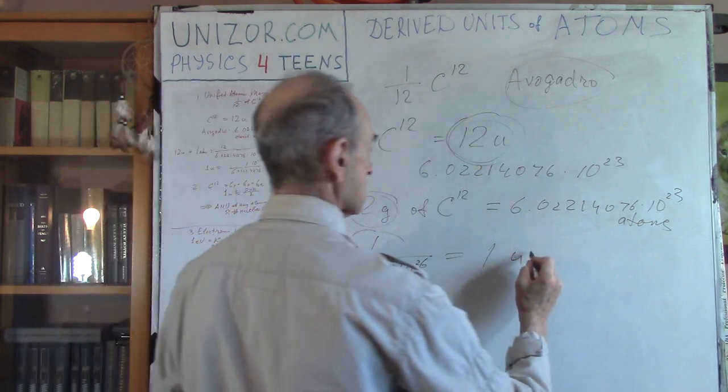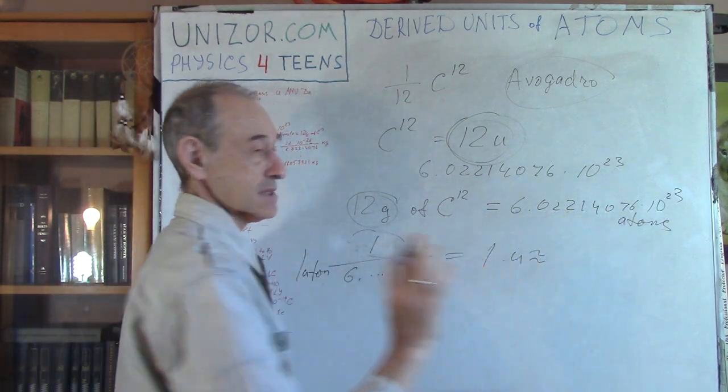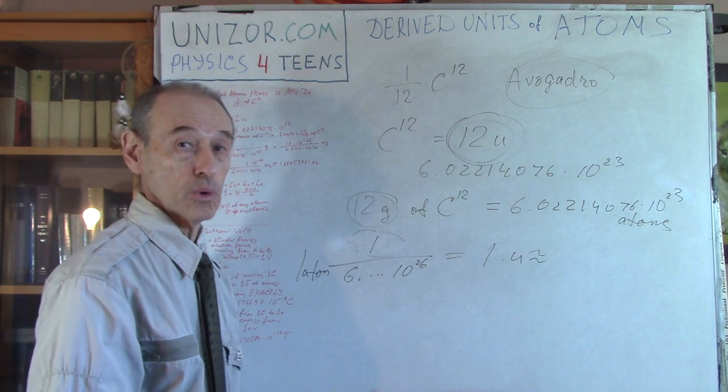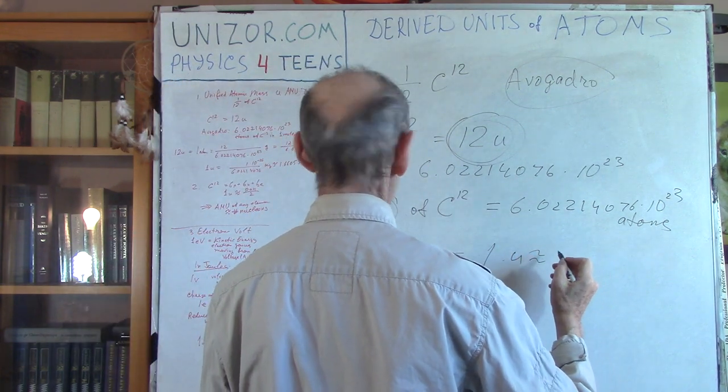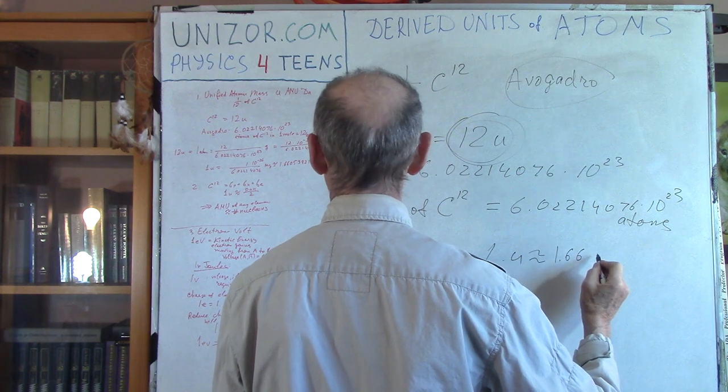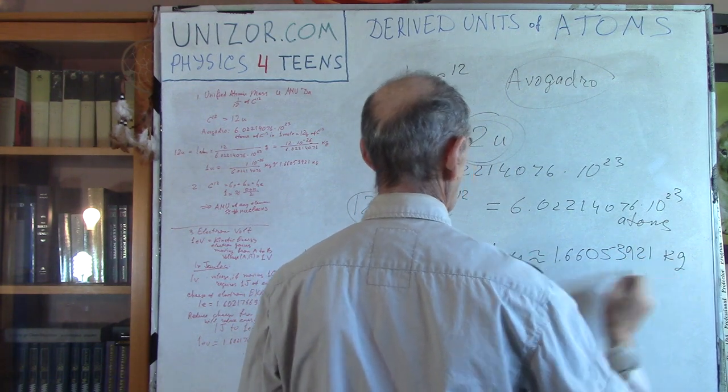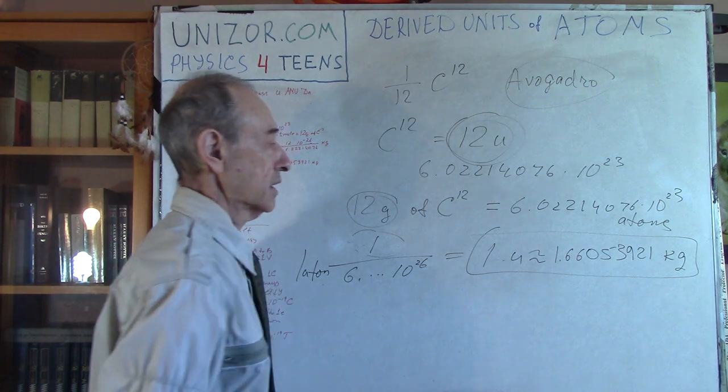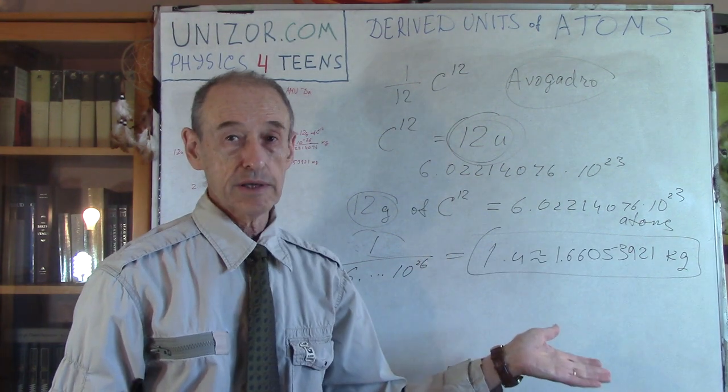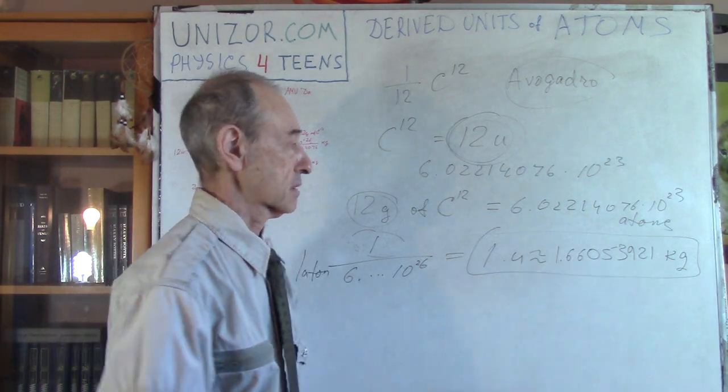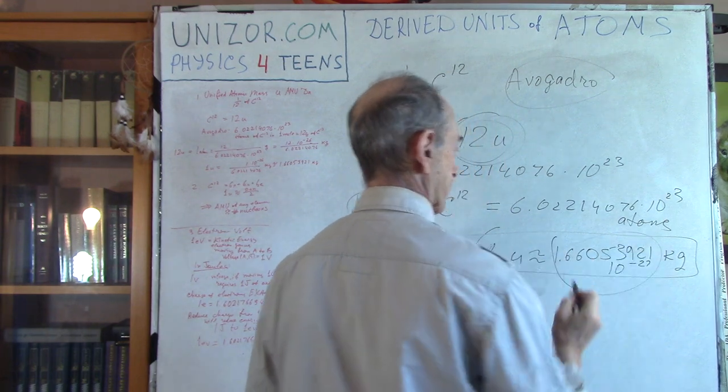If you will divide it approximately, and this is approximate because this is a division, division is not exact. When I put this number, this is exact number, this is a definition, basically, of a mole, right? When I'm really dividing it and put it in decimal, that would be a different number. It would be 1.66053921 kilogram.